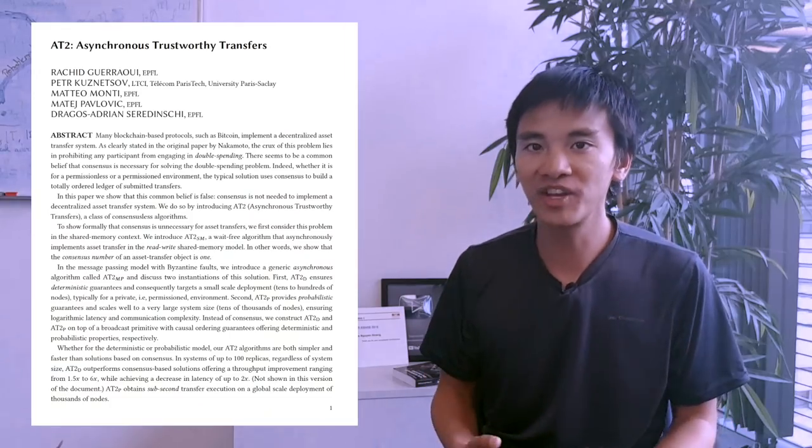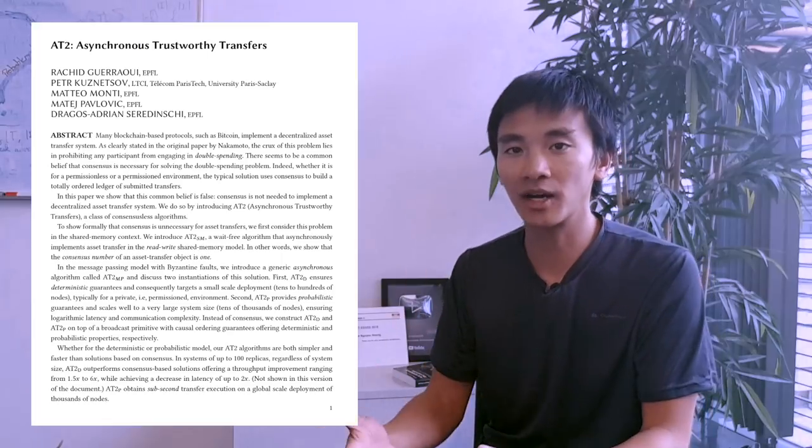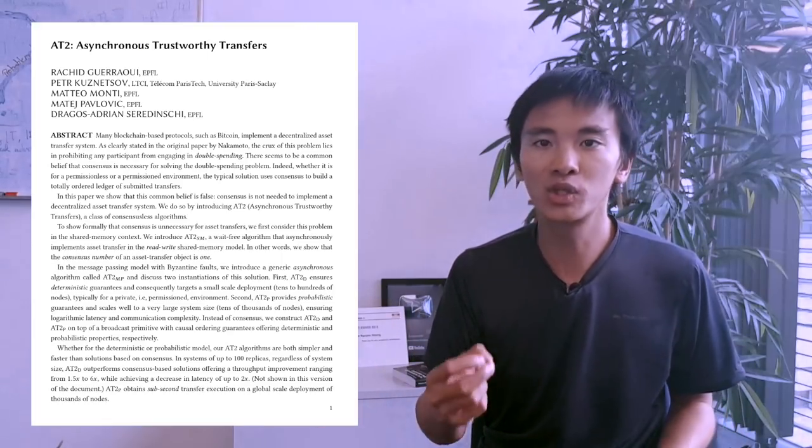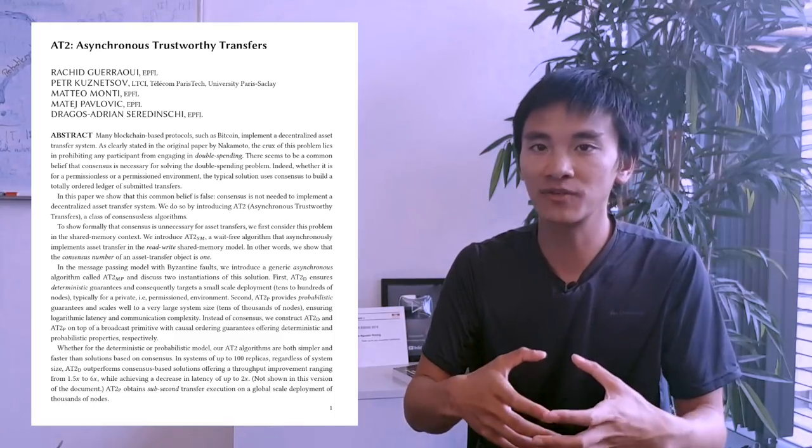Solving consensus to design cryptocurrencies is actually an overkill. By looking carefully at the original Nakamoto paper from 2008, they realized that what is solved is too much. There is no need for the abstraction of a full replicated ledger in order to implement a cryptocurrency. The problem solved by Nakamoto's paper, as stated clearly in his paper, is that of double spending. You can solve this with consensus, but you don't need consensus for that — easier solutions exist that are less complex and faster. This crucial observation, along with new techniques, allowed them to design a much more efficient solution to distributed asset transfer systems.